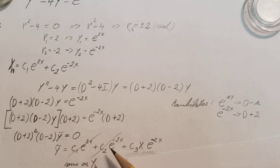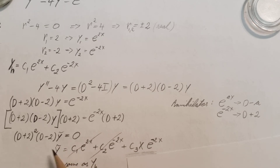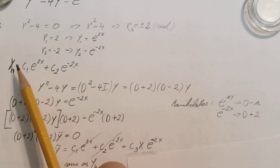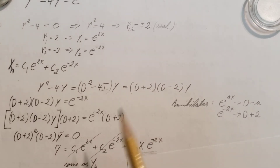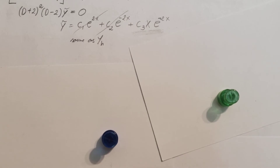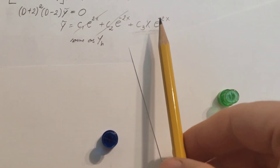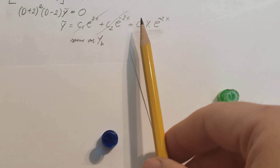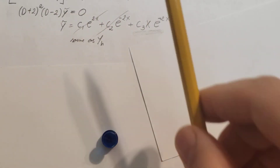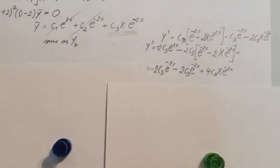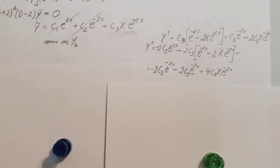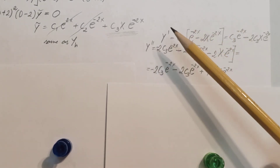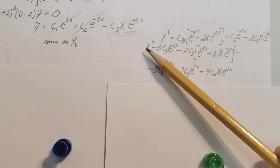Now we have three roots, so three partial solutions. At this step I call this temporary because there's too much here — these two terms are repeating from the homogeneous solution, so we need to cross them out. All we need is what is different, what is fresh. This c3 x e to the negative 2x will be my yp, the particular solution. But we need to find c3 first, so we're going to go back and plug it into the original equation. Before we can do that, we need the first and second derivatives of it.